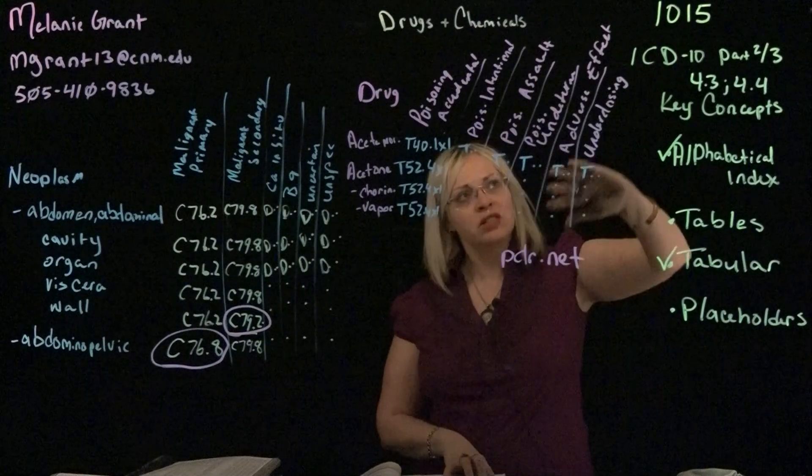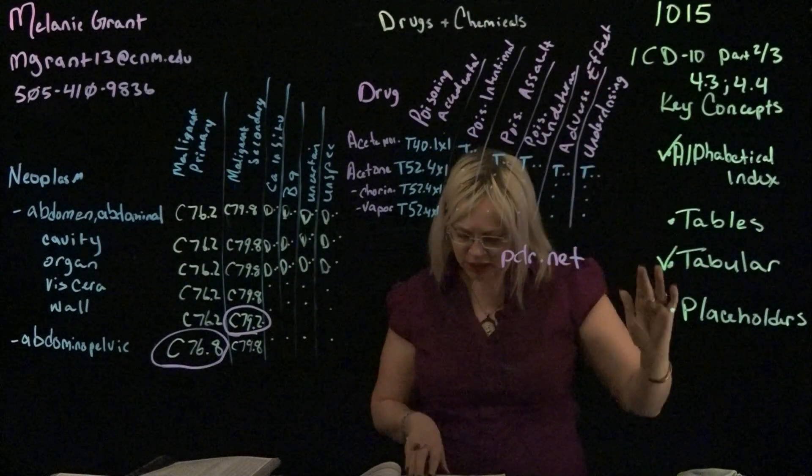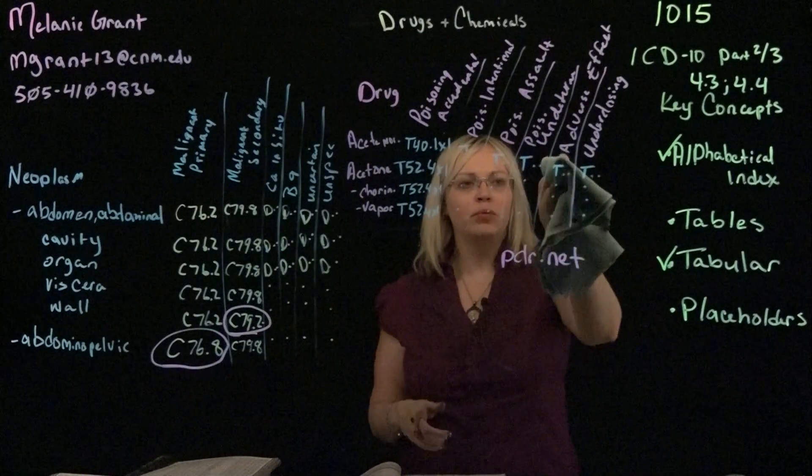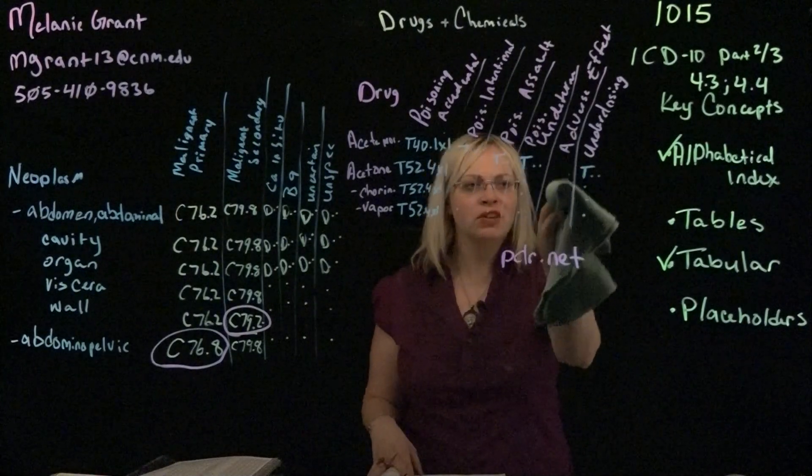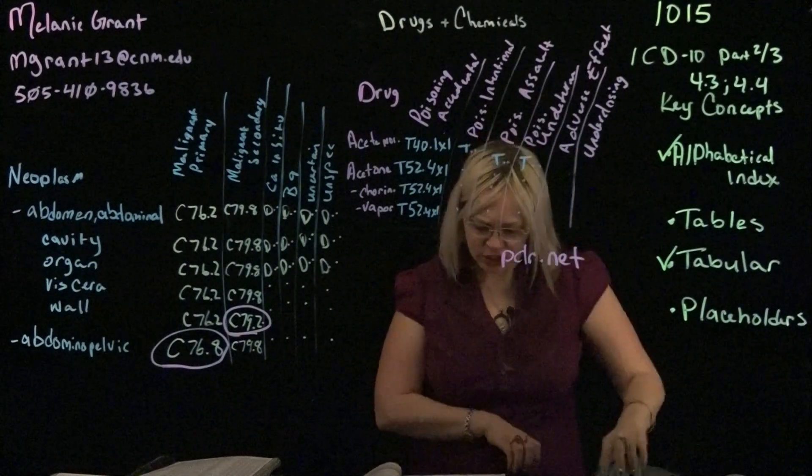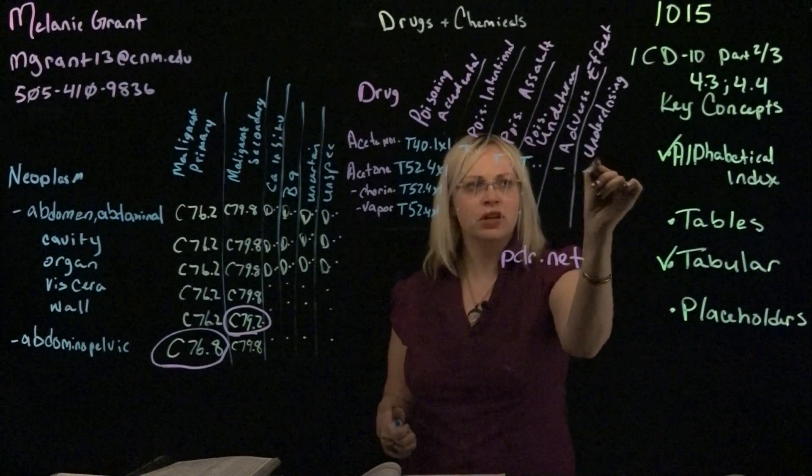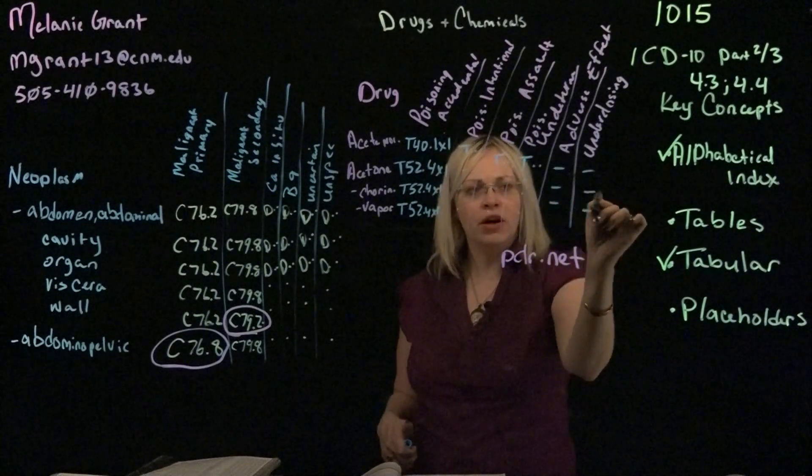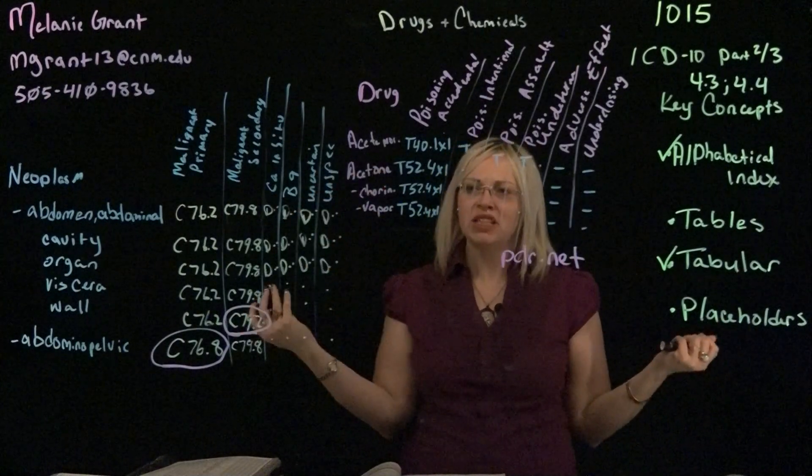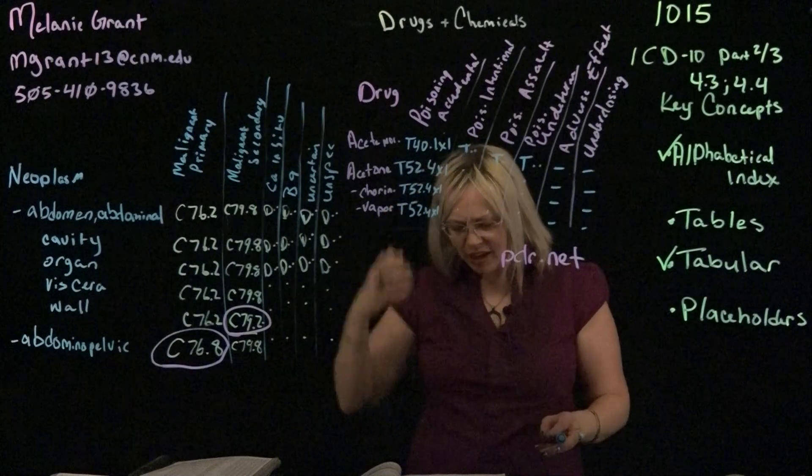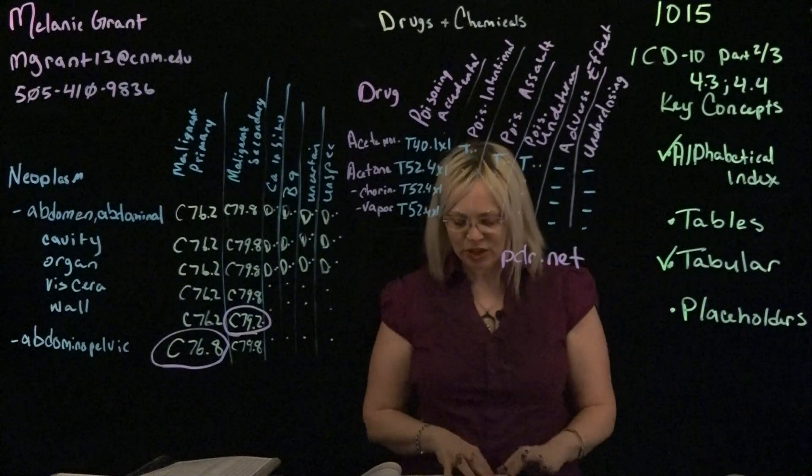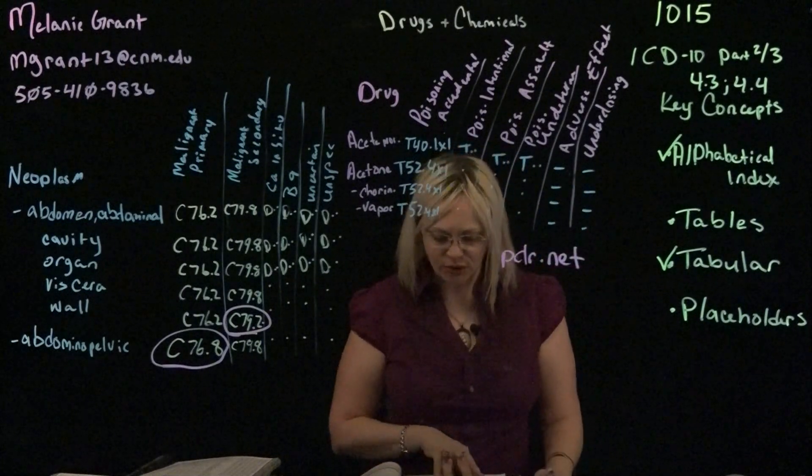And then our last two are adverse effect and underdosing. And these won't always have a code. In fact, the example that I have on the board, none of these had a code. So I'll take that out of our example here. And you can look at the table again on page 77 of your textbook to see that. And so for these ones, they had just simply a line. The reason for that is because you're not going to have an adverse effect or underdosing on a drug that is not typically taken. So acetone oils, we shouldn't be taking that. Acetomorphine, heroin, we shouldn't be taking that. So they're not going to have it as a prescription. They're taking it and they're overdosing.